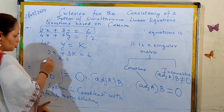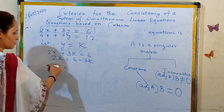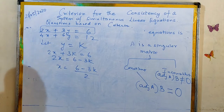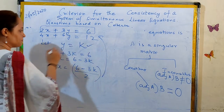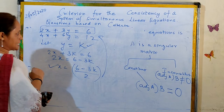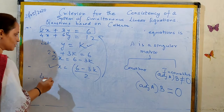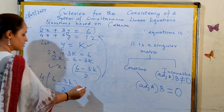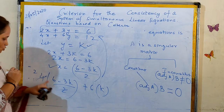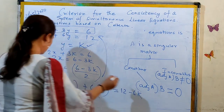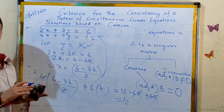We substitute x = (6 minus 3k)/2 and y = k into the second equation to verify: 4 times (6 minus 3k)/2 plus 6k = 12. Simplifying: 2 into 6 = 12, minus 2 into 3k = 6k, plus 6k cancels out, giving 12 = 12. The second equation is satisfied for any real number k, confirming infinitely many solutions.